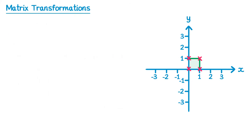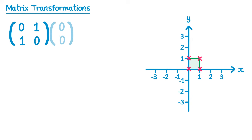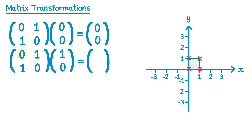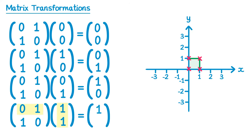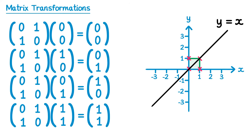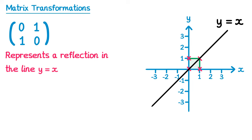There are two more matrices that give reflections. For the matrix [0 1; 1 0]: (0,0) goes to (0,0). Point (1,0): 0 1 with 1 0 gives 0, and 1 0 with 1 0 gives 1 — so (1,0) moves to (0,1). Point (0,1): 0 1 with 0 1 gives 1, and 1 0 with 0 1 gives 0 — so (0,1) moves to (1,0). Point (1,1): 0 1 with 1 1 gives 1, and 1 0 with 1 1 gives 1 — so (1,1) doesn't move. The points (0,0) and (1,1) stayed, but (1,0) and (0,1) swapped places. This matrix represents a reflection in the line y equals x.